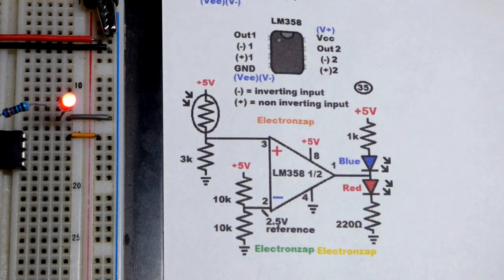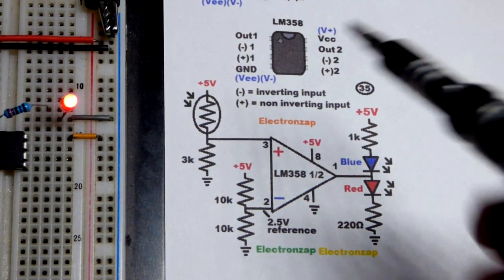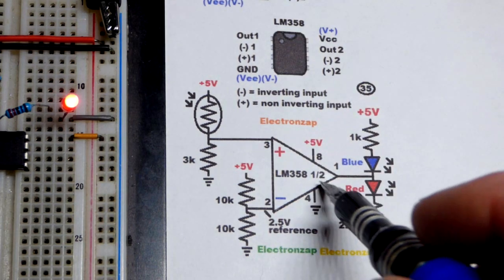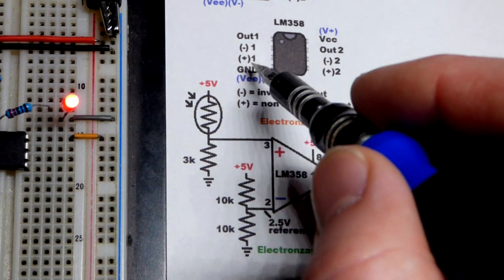So we'll take a closer look over here. So we have the LM358. There's two op-amps on there. We're only using one of the two, the left side.